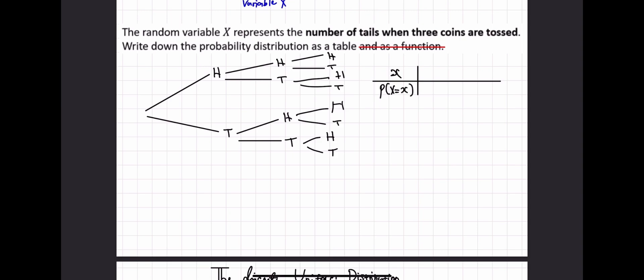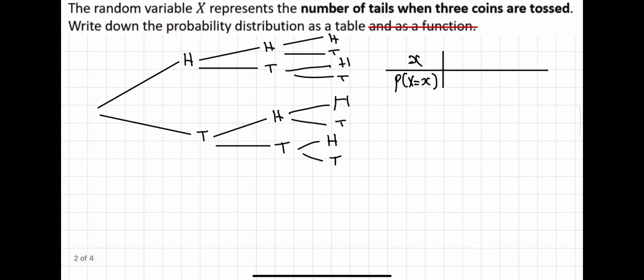And then the third time I flip the coin, I can either get a heads or a tails. Heads or tails. Heads, tails. Heads or tails. So those are my outcomes. Now, let's write it as a probability distribution. So if I flip a coin three times and I want to record the number of tails, you can either get zero tails, one tail, two tails, or the coin lands on tails every single time. In that case, you have three tails.